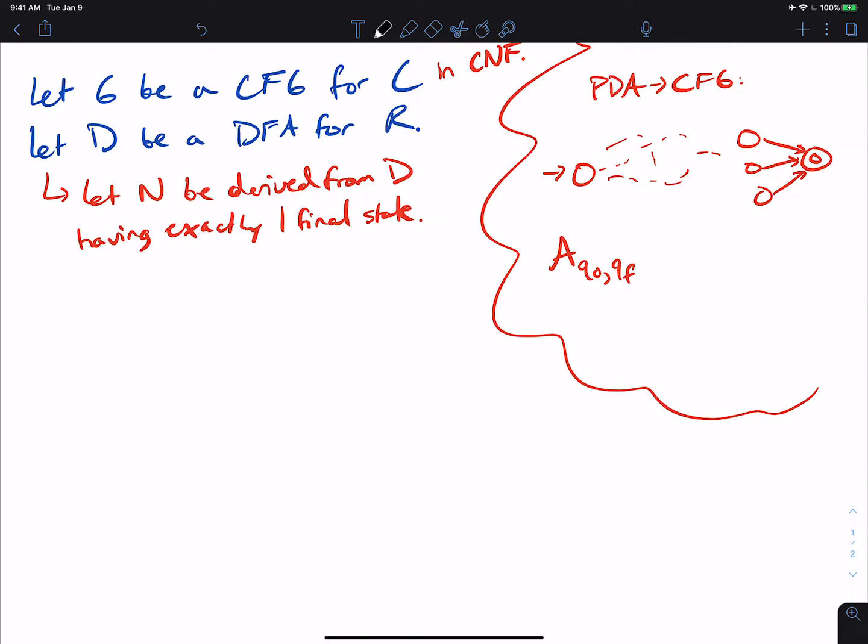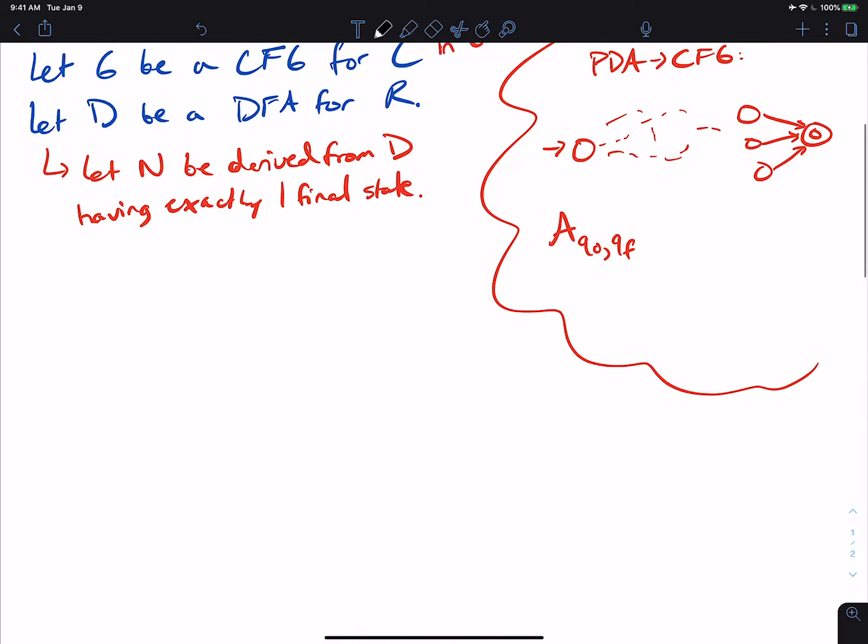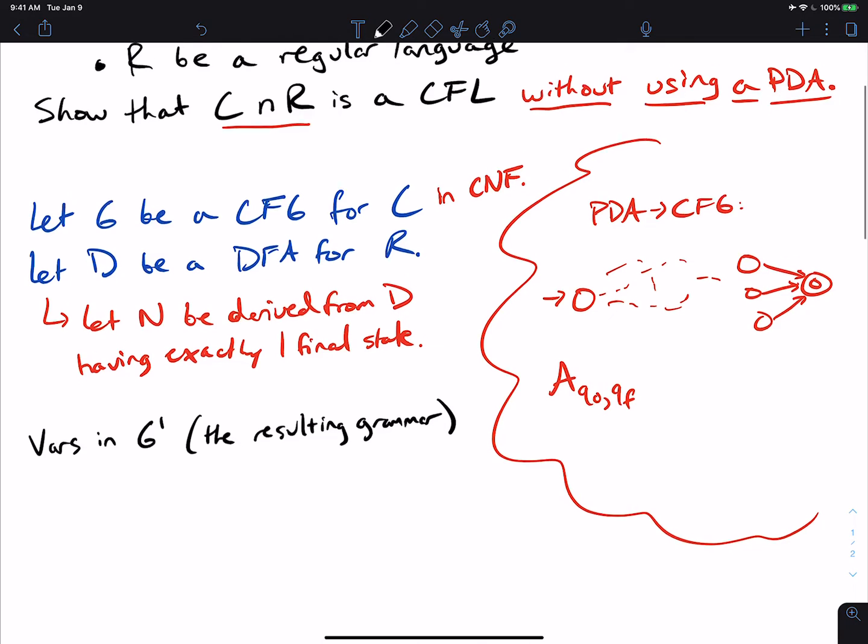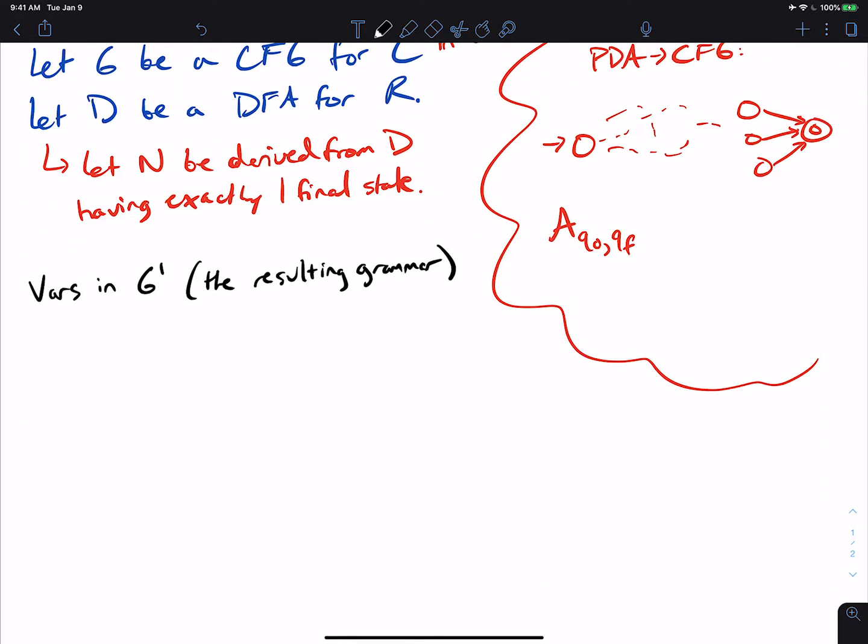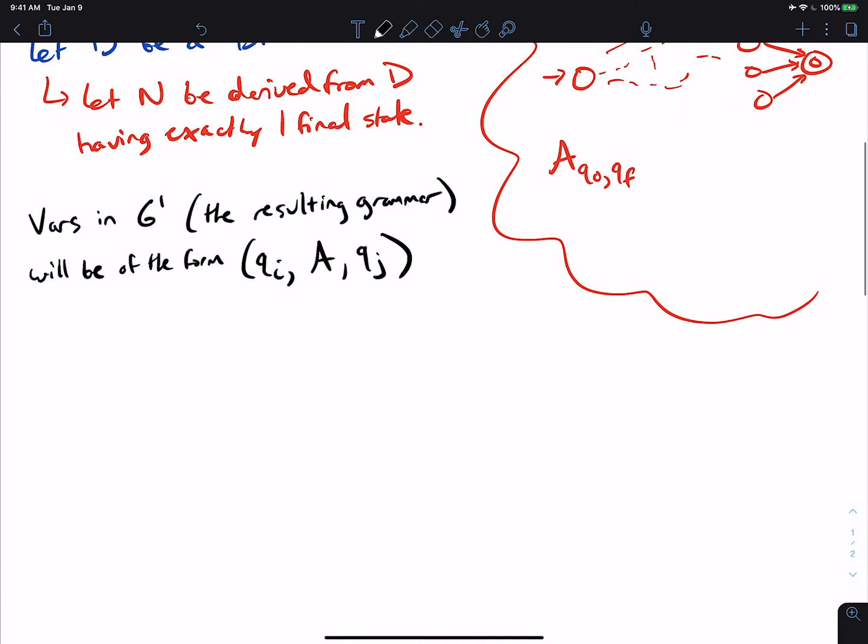So let's figure out what we're going to do here. So what we're going to model this as, we're going to have the variables in G prime, the resulting grammar. So I'm going to call the grammar that is the intersection of the two, C intersection R to be G prime. That's what I'm going to call it. And the variables will be of the form QI, A, QJ.